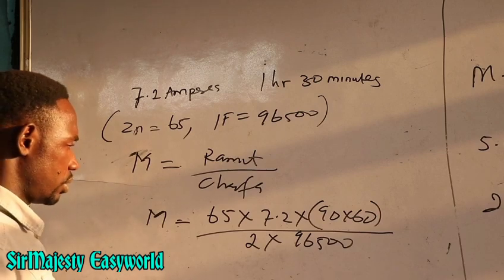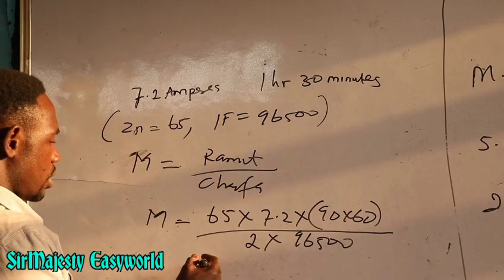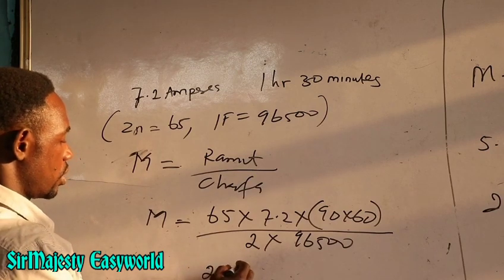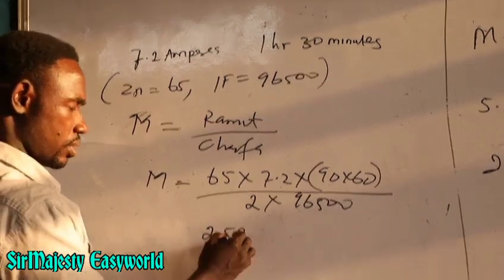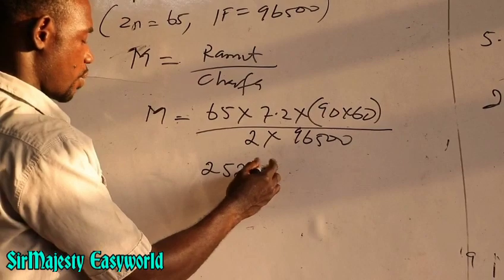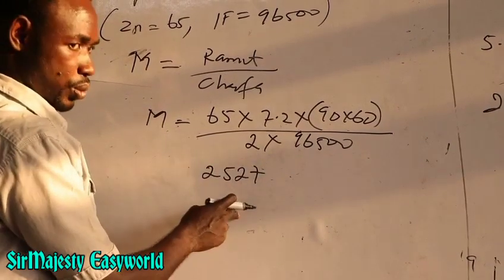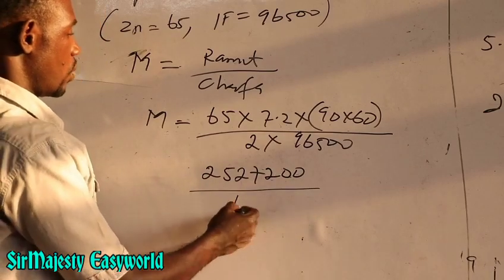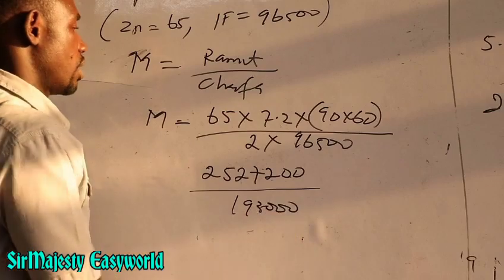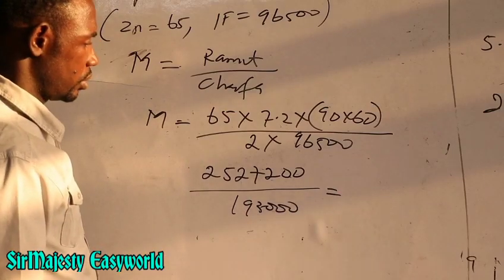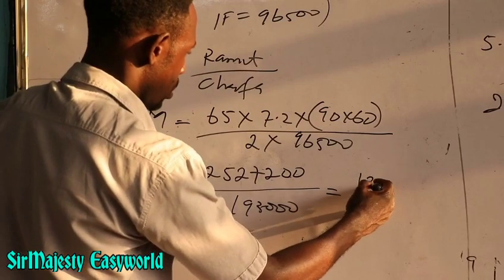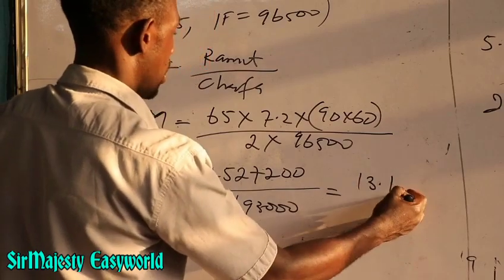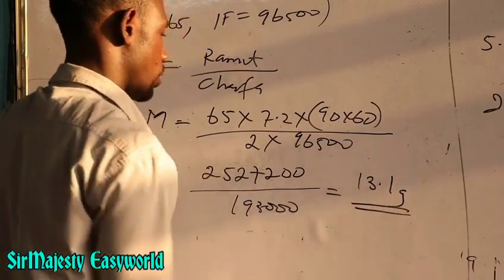Calculating: 65 × 7.2 × 5,400 equals 2,527,200. Denominator: 2 × 96,500 equals 193,000. Dividing gives M equals approximately 13.094 grams, which rounds to 13.1 grams of zinc deposited.